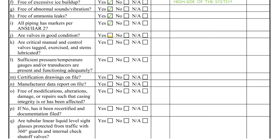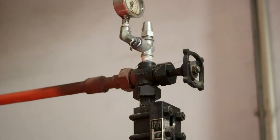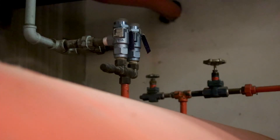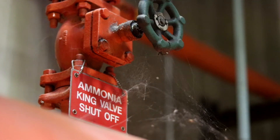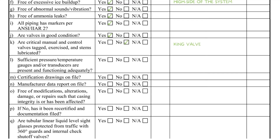Items J and K pertain to valves associated with the vessel. All valves should be visually inspected. Deficiencies that should be recorded include corroded or painted stems, missing hand wheels, damaged seal caps, or excessive valve body corrosion. In this example, the king valve has cobwebs on the hand wheel, which is an indication that the valve has not been exercised or lubricated for some time, and should be recorded as a finding.